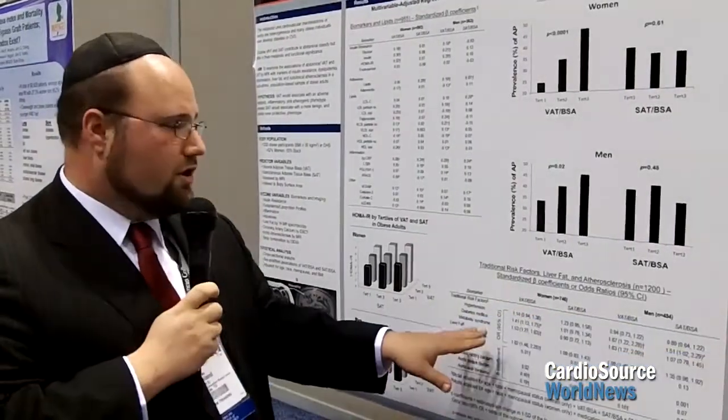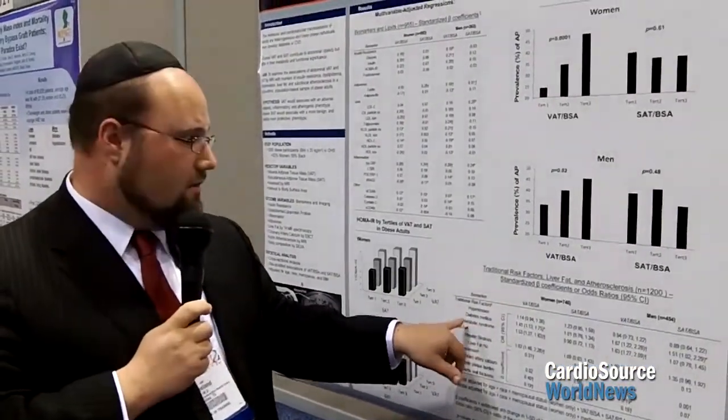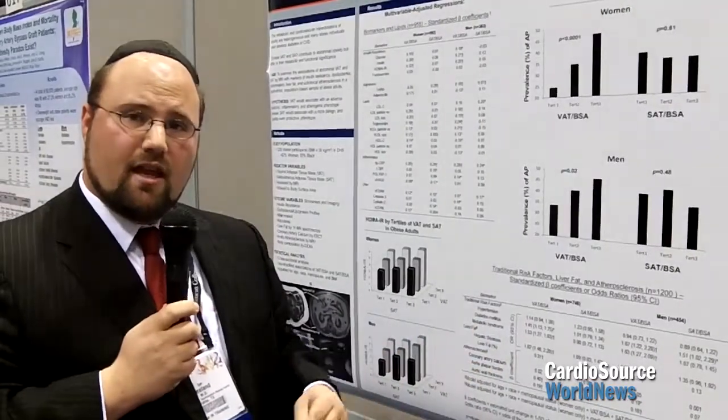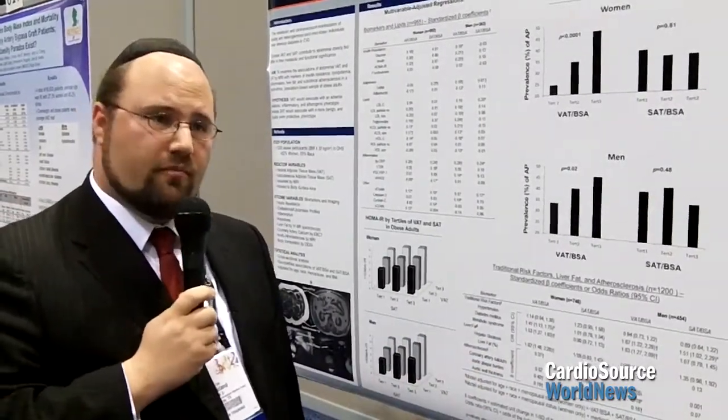We also saw that visceral adipose tissue, but not subcutaneous adipose tissue, was strongly associated with hypertension, diabetes mellitus, metabolic syndrome, liver fat, and abdominal aortic atherosclerosis.